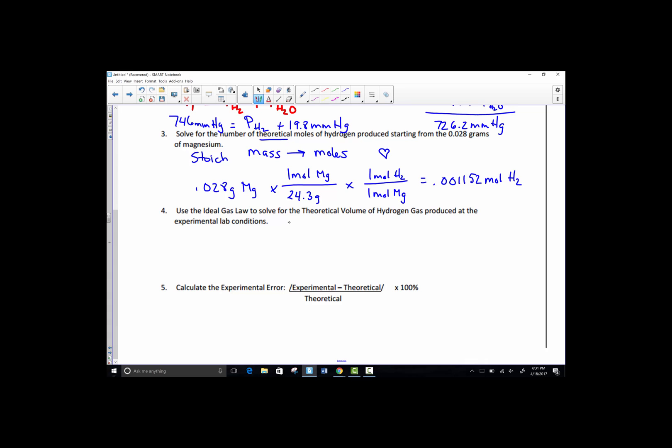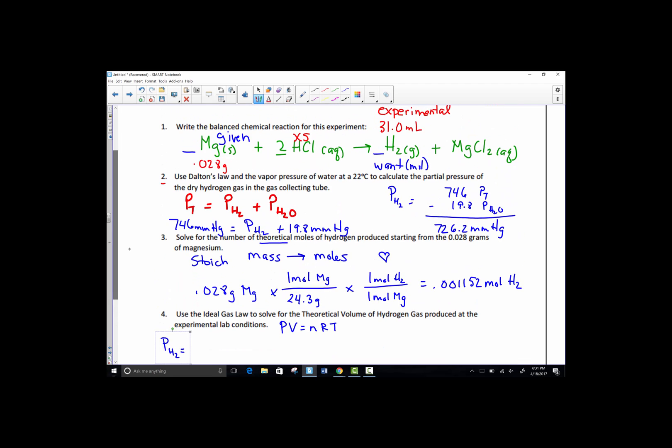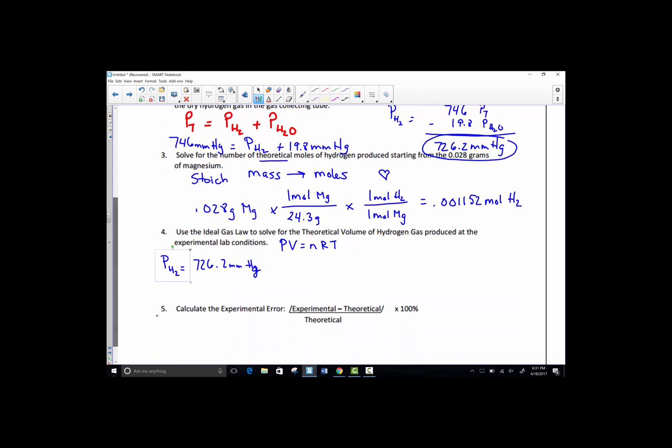Now we'll use the ideal gas law to solve for the theoretical volume of hydrogen gas. The ideal gas law is known as the PV=nRT equation. Pressure is going to be that corrected pressure that we found up above here. The corrected pressure of just the dry hydrogen gas. 726.2 millimeters mercury. The corrected pressure stands for the P.